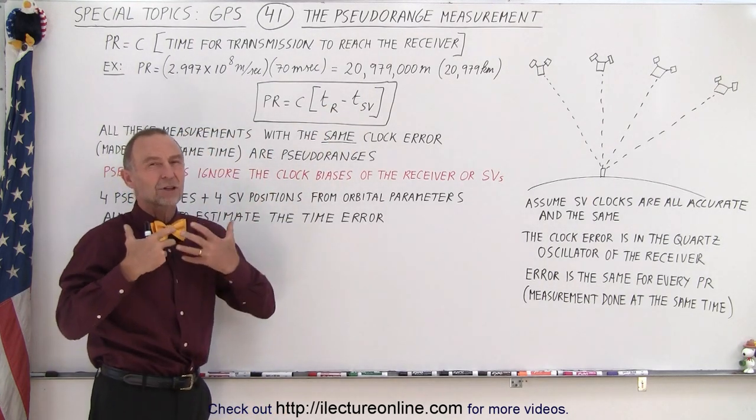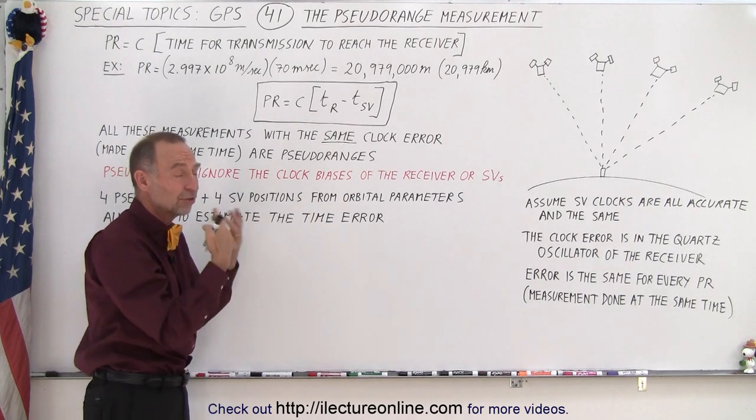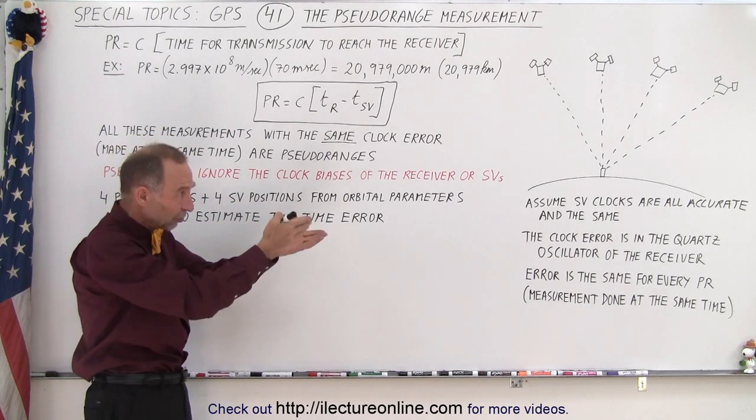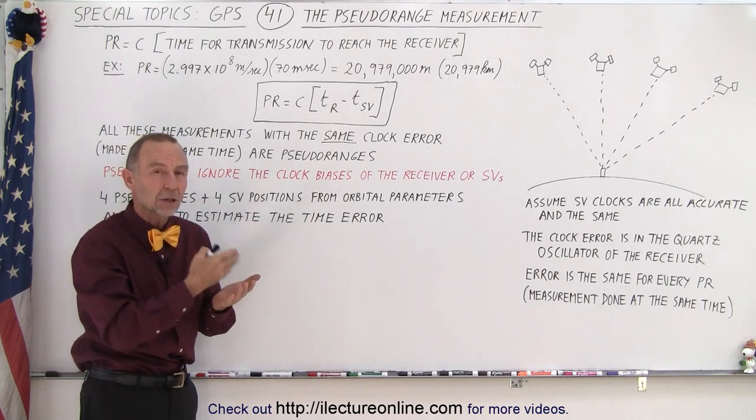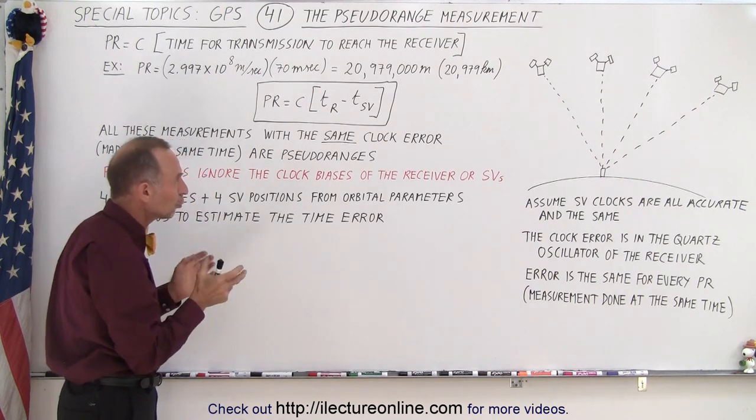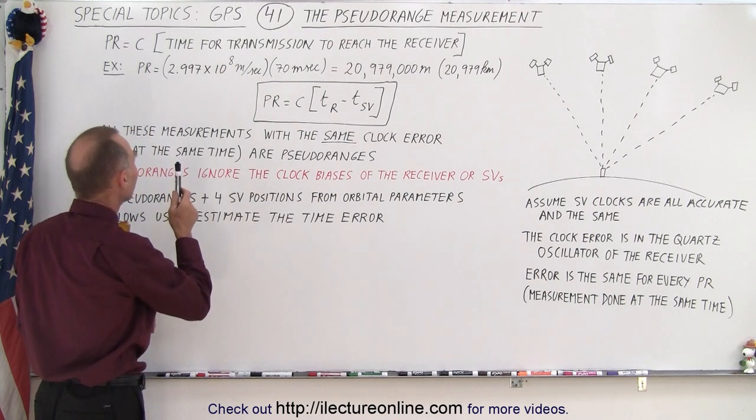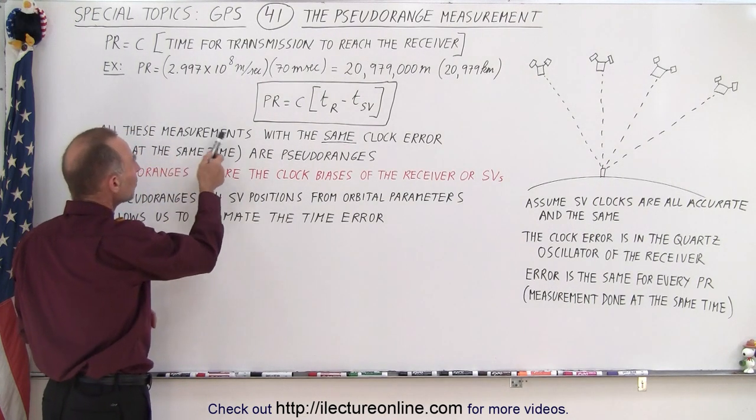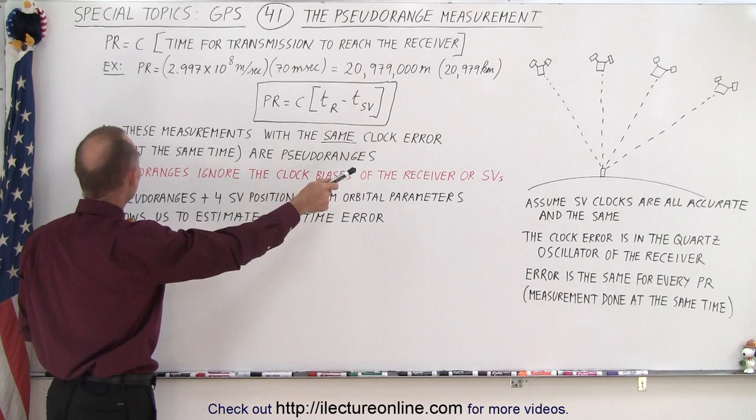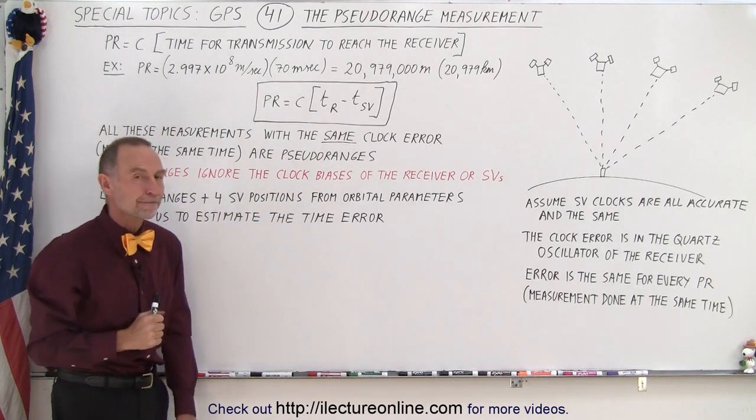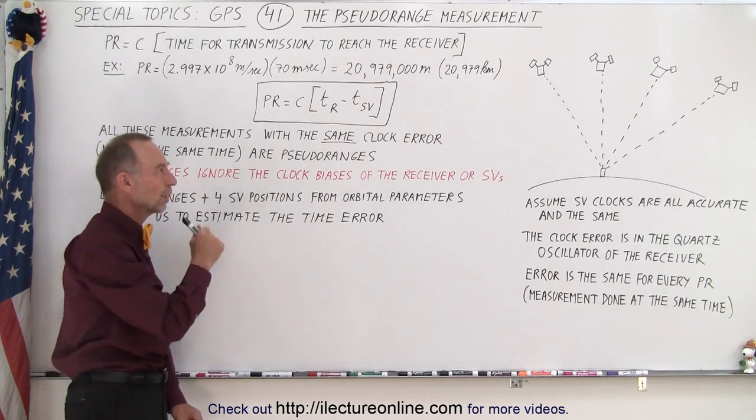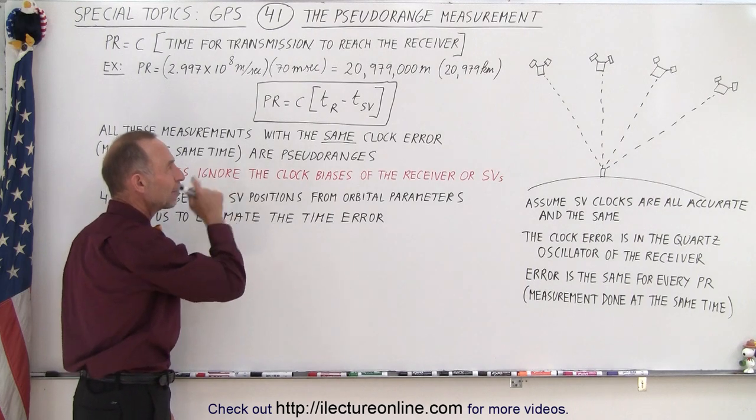Now of course we know we have clock errors. We have clock errors in the receiver and we have clock errors in the clocks of these satellites. So in order to make things a little bit easier, what we're going to do is realize that all these measurements with the same clock error are made at the same time. And they're therefore called pseudoranges. So what do we mean by the same clock error?